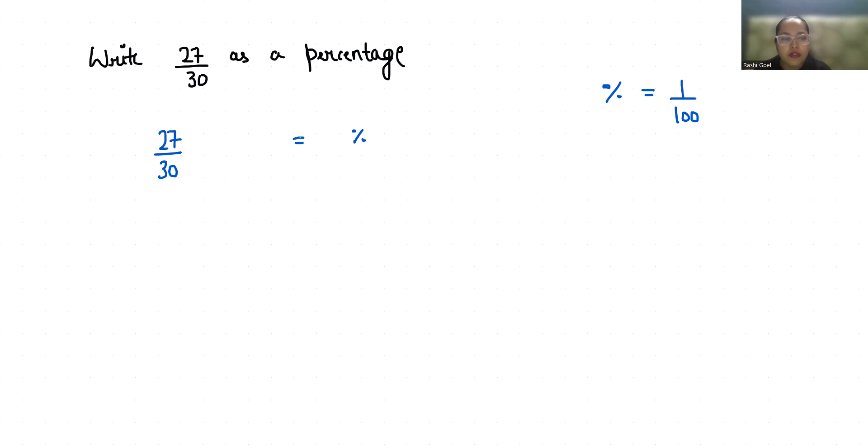I am going to multiply with 10 in numerator as well as in denominator. So it becomes 270 by 300 which I can write it as 270 by 3 times 100.